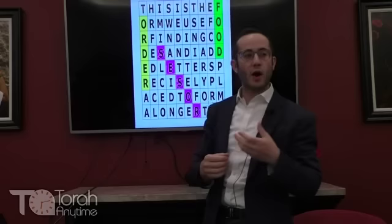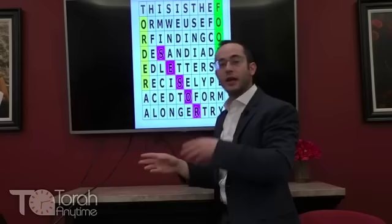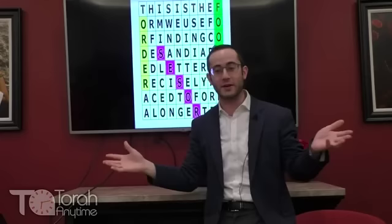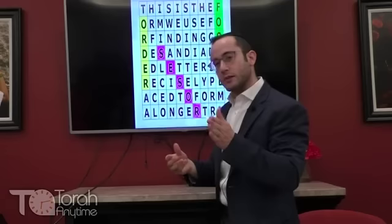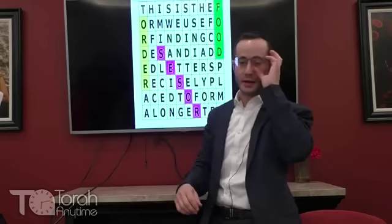This is called ELS — Equidistant Letter Skip. This is important because it means something. If I say count the first five letters, get an I, then twelve letters for an S, then fifteen for an R, and so on to spell 'Israel' — that doesn't mean anything, because you could find anything that way. But equidistant letter skip — skipped at precisely the same intervals every single time to form a word — that shows something more impressive.